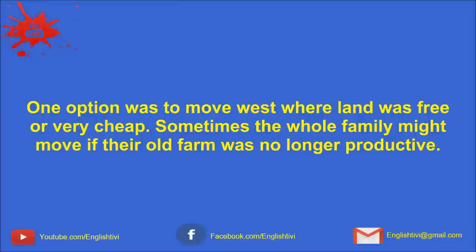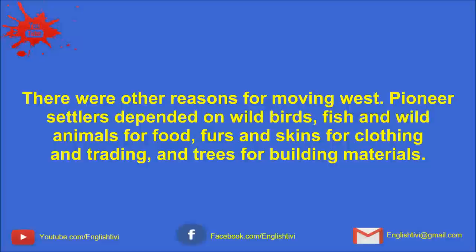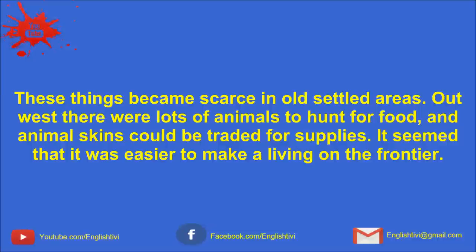Often the sons would want to begin their own farm and start their own family. But if there was no farmland available, or if it was too expensive to buy, they were out of luck. One option was to move west, where land was free or very cheap. Sometimes the whole family might move if their old farm was no longer productive — perhaps the old farm was on poor soil, or too much farming had exhausted the soil. There were other reasons for moving west. Pioneer settlers depended on wild birds, fish, and wild animals for food, furs and skins for clothing and trading, and trees for building materials. These things had become scarce in old, settled areas. Out west, there were lots of animals to hunt for food, and animal skins could be traded for supplies.